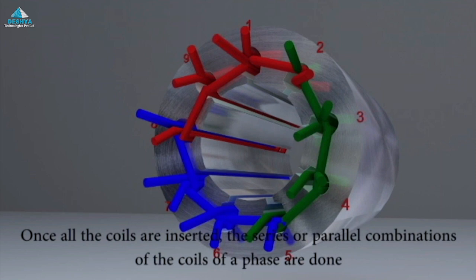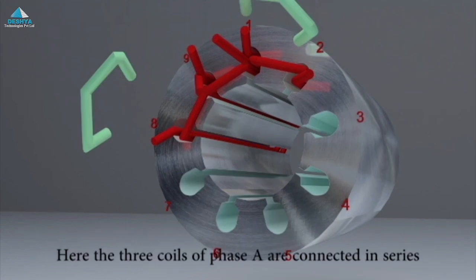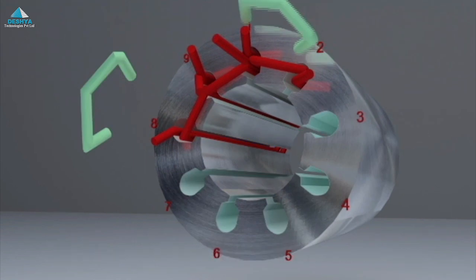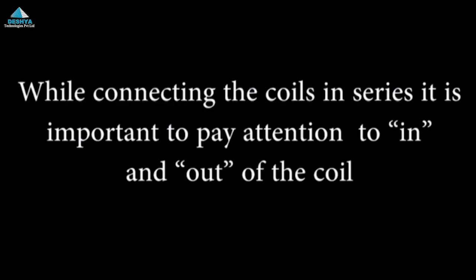For each pole slot combination, there is a unique 3D animation that explains how the coils are placed into the slots of the stator. These animations also show how the coils of a phase are connected.